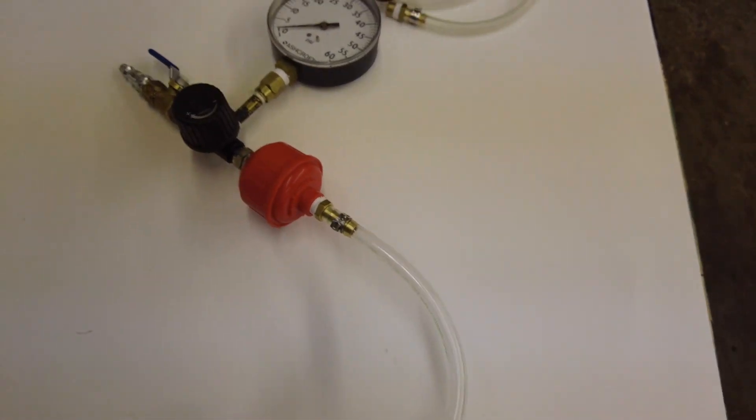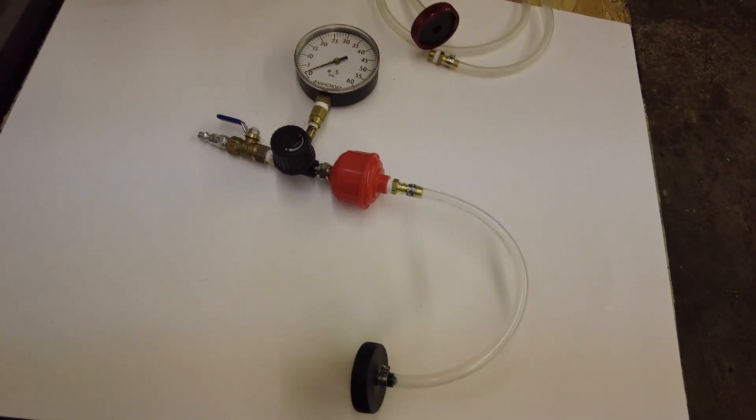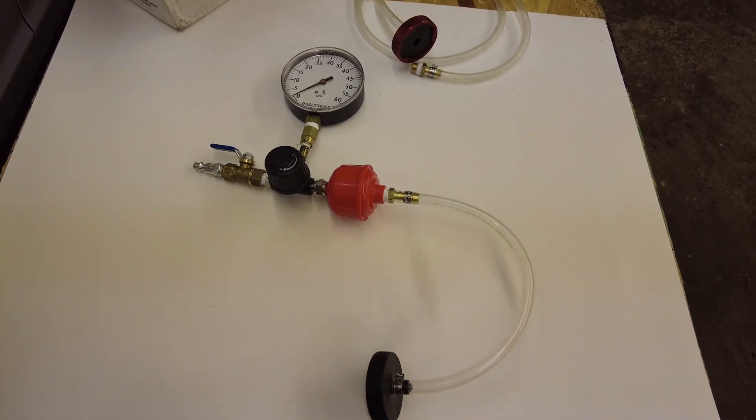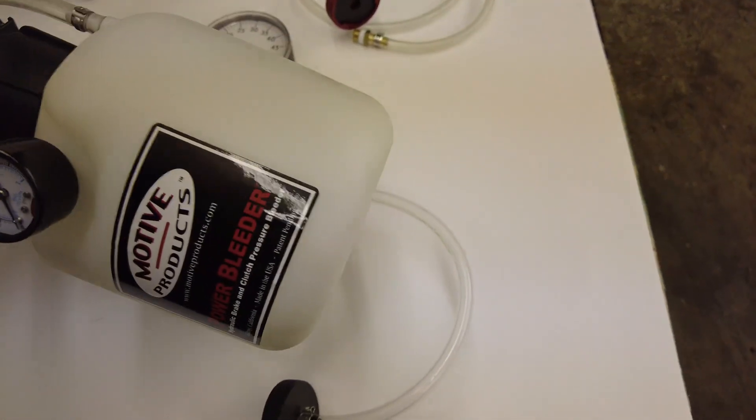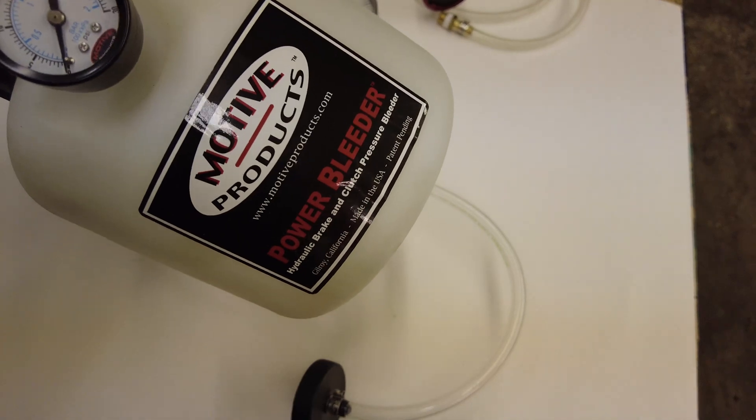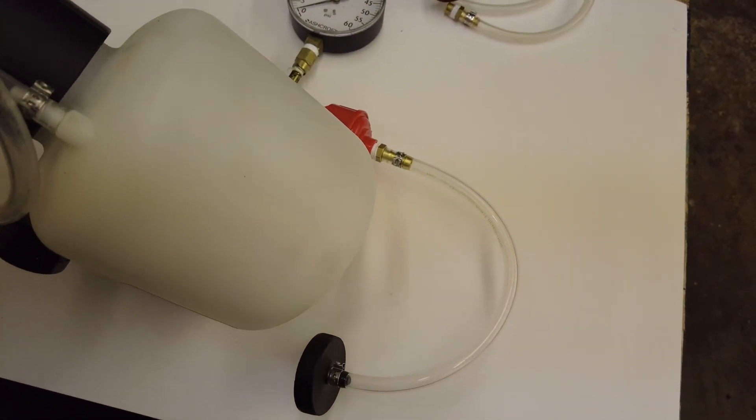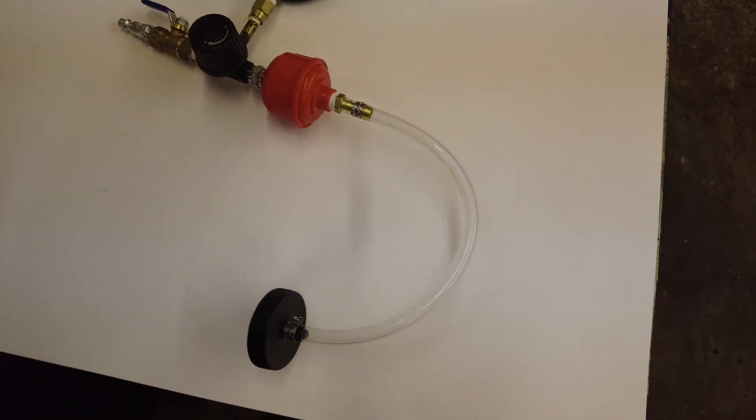It will keep your master cylinder pressurized while you're going around the four corners bleeding the brakes. The problem with that method is you got to make sure that your master cylinder doesn't run dry, but the advantage is you don't get this tank all funky with different types of brake fluid. So I choose to just use this as a pressure source and keep the fluid out of it and just make sure that the master cylinder doesn't run dry.